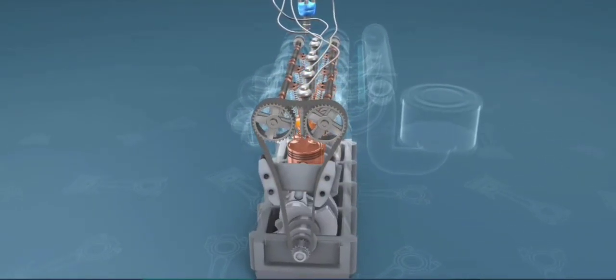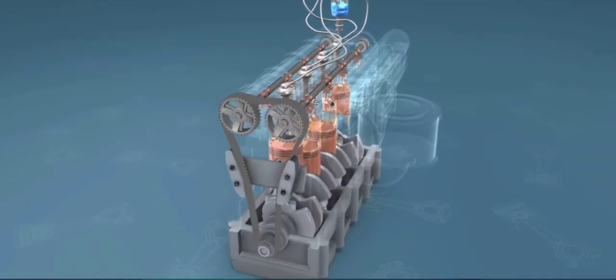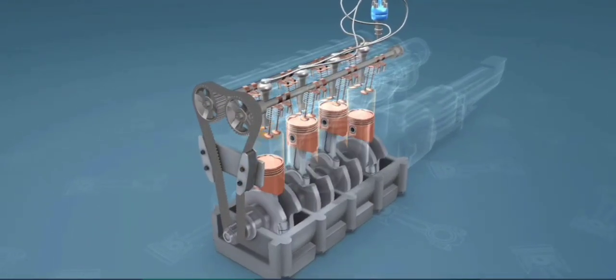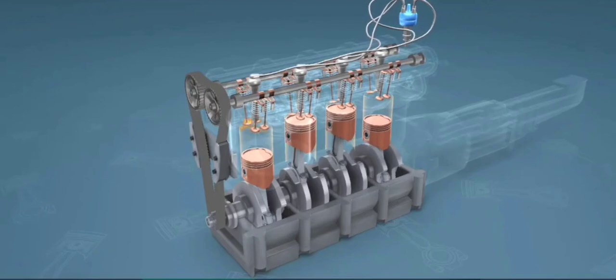Compression: this stroke begins at BDC, or just at the end of the suction stroke, and ends at TDC. In this stroke, the piston compresses the air-fuel mixture in preparation for ignition during the power stroke. Both the intake and exhaust valves are closed during this stage.